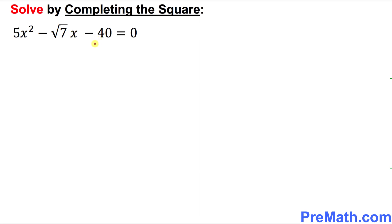The very first thing is to make sure that you have only x variables on the left-hand side. That means this constant, negative 40, must go on the other side. So we're going to have 5x² minus √7·x on the left, equal to positive 40 on the right.